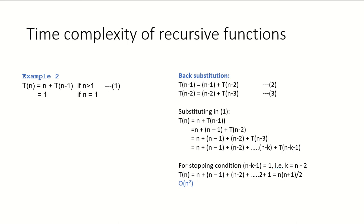Let us take another example where the recurrence relation is: T(n) = n + T(n-1) if n is greater than 1, and T(1) = 1. We are going to use back substitution again. First we compute T(n-1) by substituting n-1 in the equation: T(n-1) = (n-1) + T(n-2). Similarly, T(n-2) = (n-2) + T(n-3). We will substitute these values into equation 1.